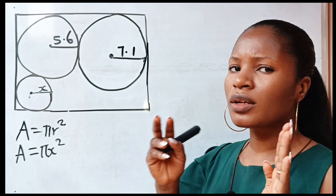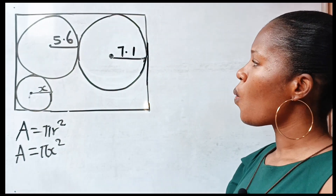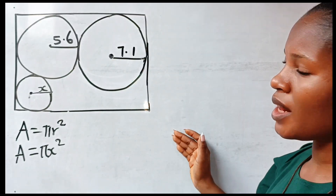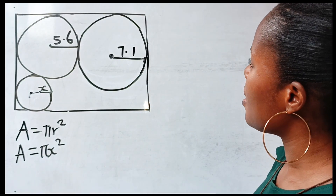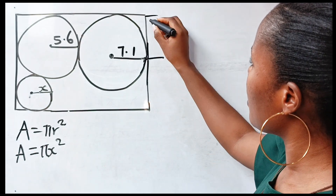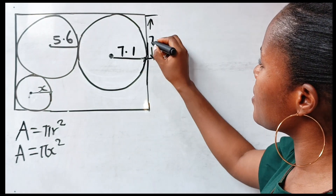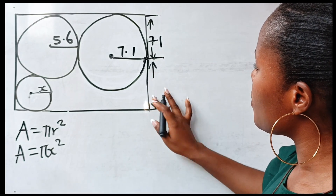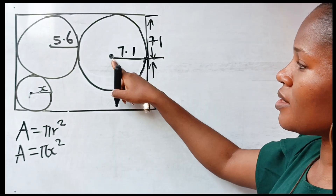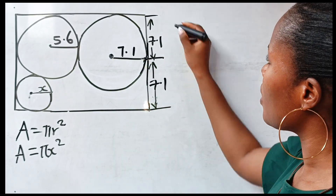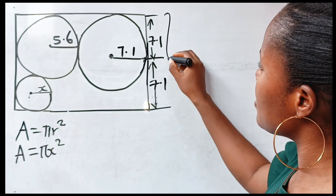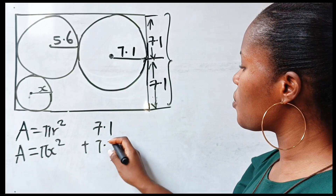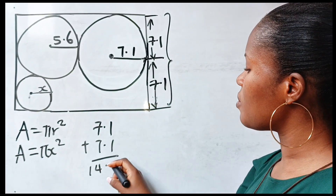Let us start by working with the information given to us. Since the center is in the middle of this line, from here to here is the radius of this circle, which is 7.1. And from here to here is the radius as well, since we are told that this is at the middle — so this is 7.1 as well. It simply means that the side of this rectangle is 7.1 plus 7.1, which gives us 14.2 units.